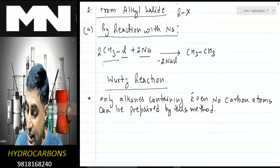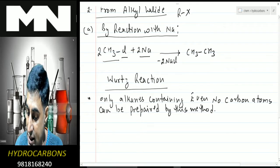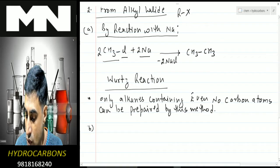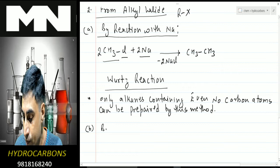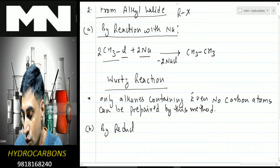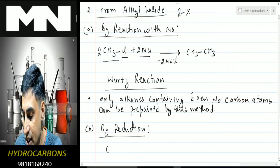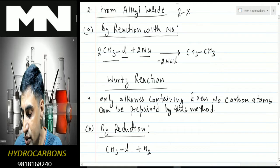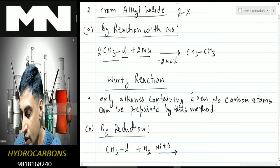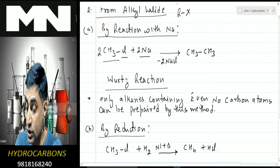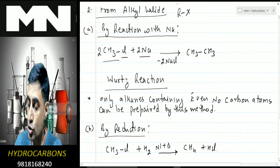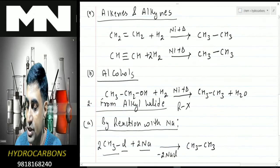The second method from alkyl halides is by reduction. If we carry out reduction of alkyl chloride — for example CH₃Cl with hydrogen in the presence of nickel and heat — we get CH₄ plus HCl. This is how alkanes are obtained from alkyl halides by reduction.